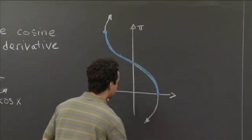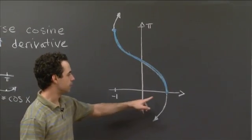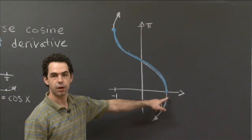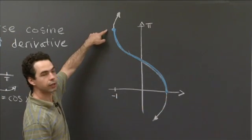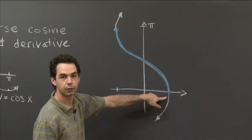So this has maximum. So it goes from x equals minus 1 to x equals 1. And when x is minus 1, we have y is pi. And then when x equals 1, y is 0.